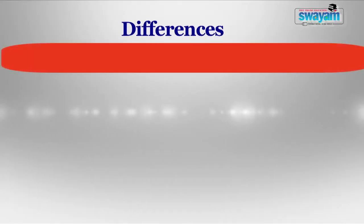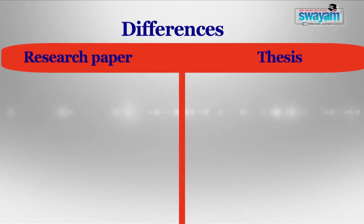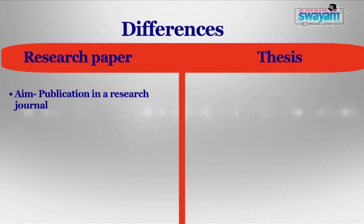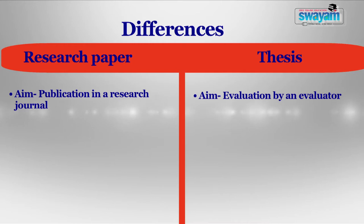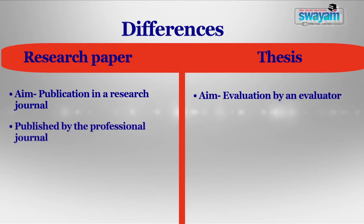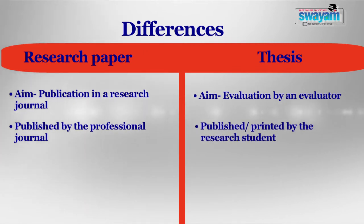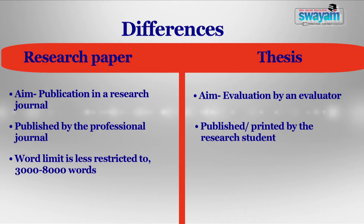The difference between a research paper and a thesis lies in the aim of the two. A research paper is written to document a research work through publishing it in a research journal. The purpose of a research paper is to document the significance of the research question, explanation of the research process, and declaration of the findings. Through this, we share our research findings with our professional peers in an authentic and acceptable manner.